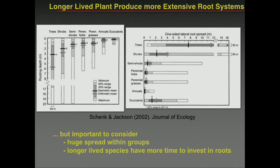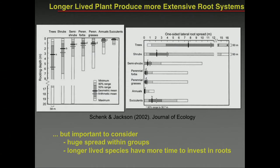Even within one form of plant with a specific lifestyle, there's tremendous variation to explore. Trees and shrubs are often very long-lived, so they have a lot of time to produce root mass. If your aim is to produce more root mass, you have to consider the time axis — you cannot compare a 300-year oak that had 300 years of forming a root system with a one-year annual plant.